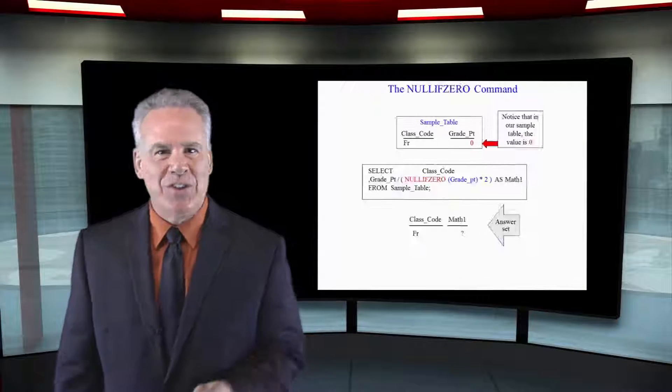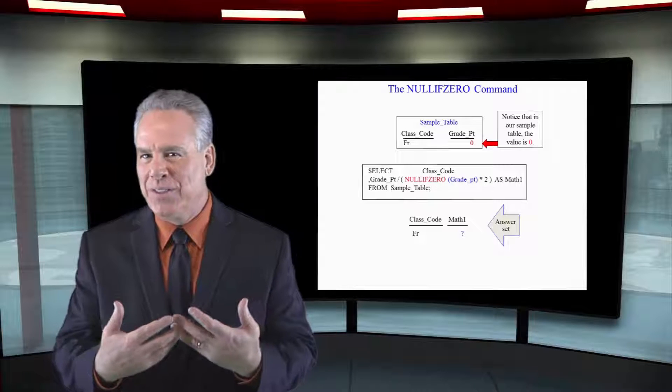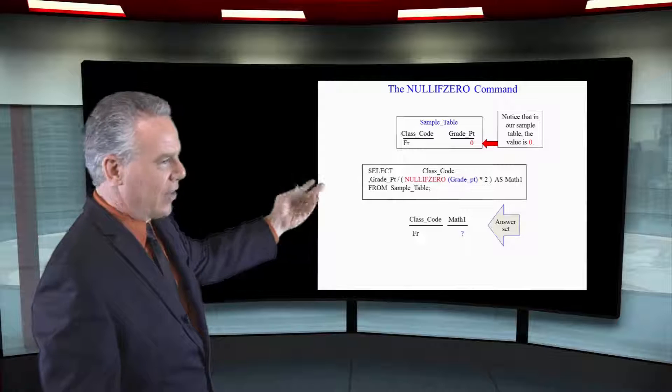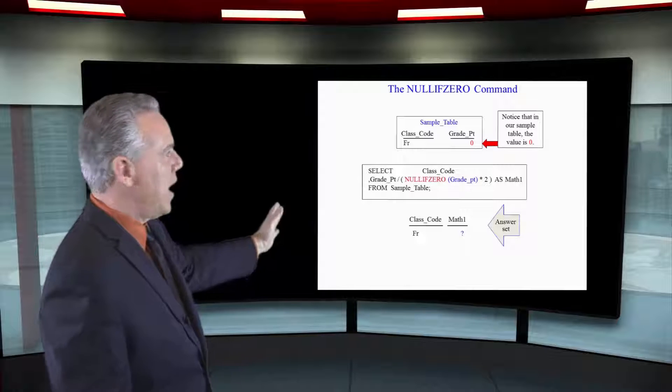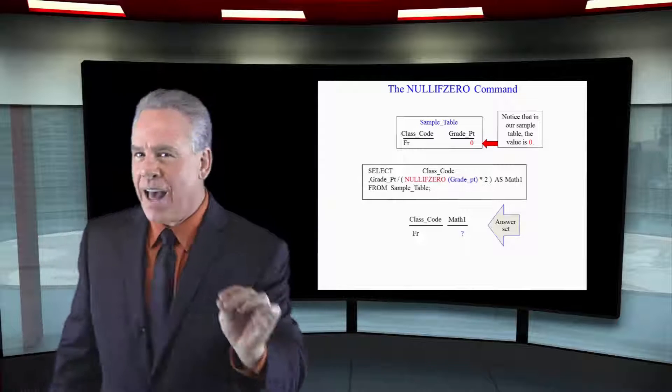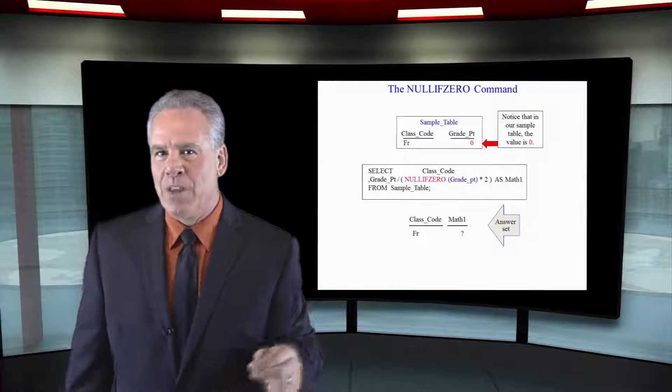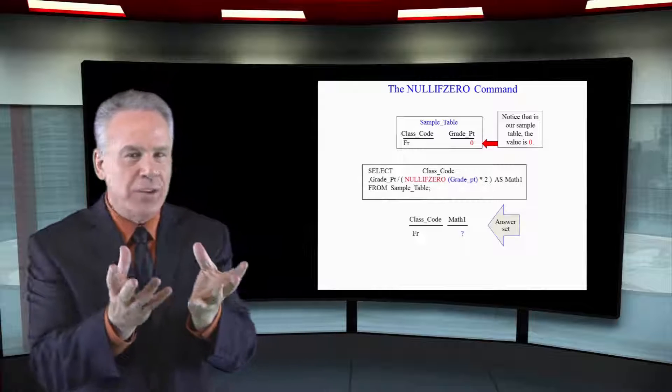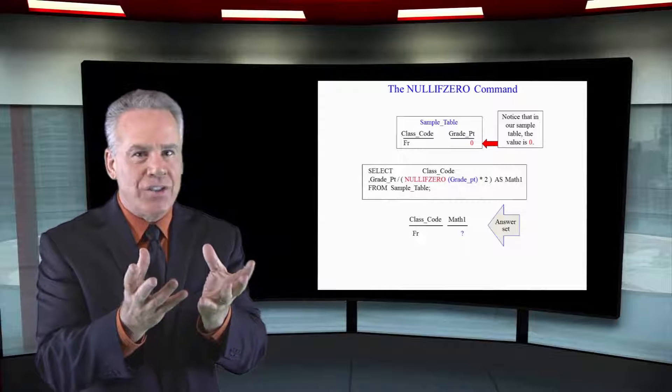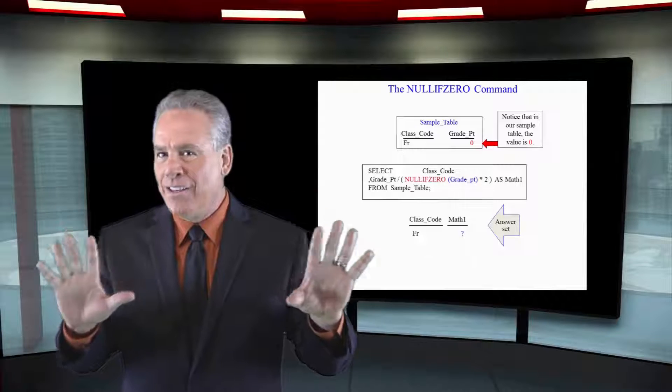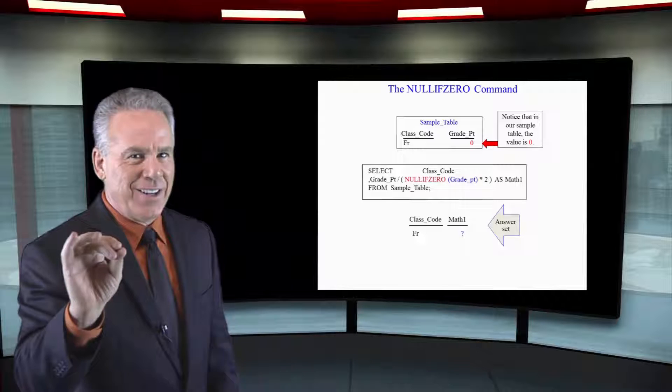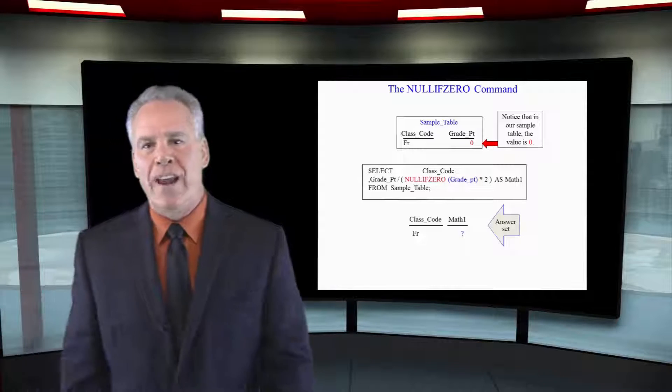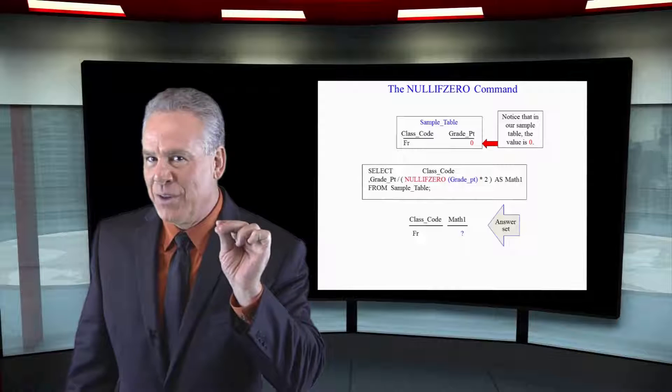The first thing I want you to see is the NULLIFZERO command. As you can see here we're going to select the class code and then we're going to say I want the grade point divided by open paren NULLIFZERO that grade point which is going to take the grade point. If it's not zero then it's not going to do anything to alter the data but if it is zero it will make it null and then we will no longer have the division by zero error.